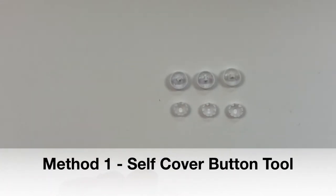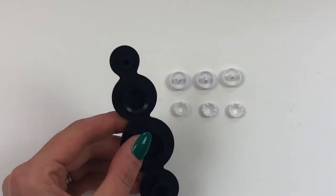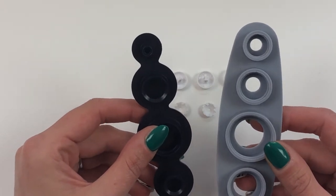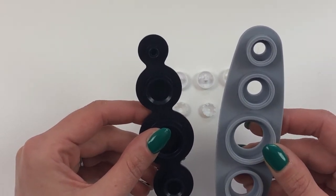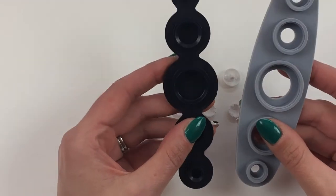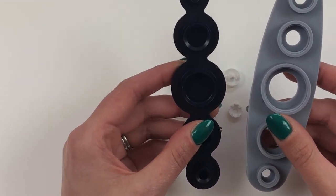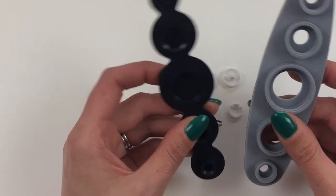The easiest way to cover this type of button is to use one of these devices and these can be quite easily purchased online or in any fabric or haberdashery shop. When you're shopping just look for a self-cover button maker or cover button tool and you should be able to find this.